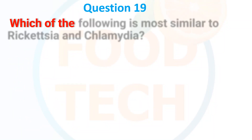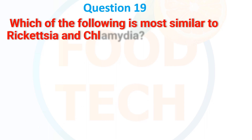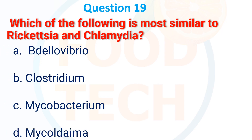Which of the following is most similar to Rickettsia and Chlamydia? A. Vibrio, B. Clostridium, C. Mycobacterium, D. Mycoplasma. The answer is C: Mycobacterium.